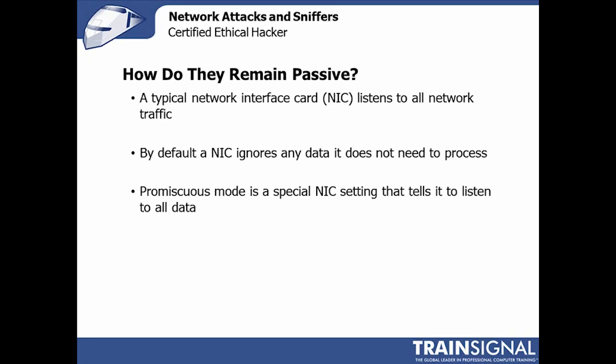A question that often comes up is: how do these network sniffing tools remain passive? How do they stay out of the way of network intrusion detection and intrusion prevention systems, and avoid tipping off administrators? The interesting thing is in how a network interface card, or NIC, works. A NIC connected to a network listens to all network traffic, and by default it simply discards or ignores any traffic that it's not supposed to service — any traffic not destined for the upper-level protocol suite or operating system, it just throws away.